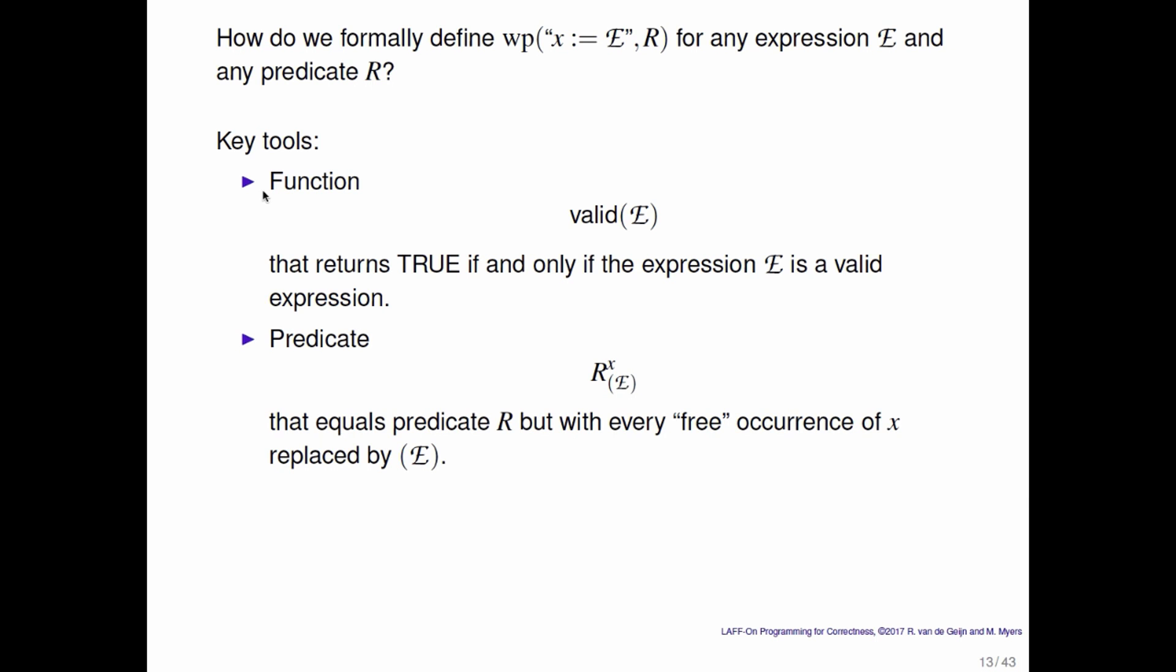Also, we introduce a predicate r super x sub e with parentheses around it. What does that denote? Well, it's the predicate r, the postcondition, but every free occurrence of x is replaced by the expression. What free occurrence means we will illustrate a little bit later on. The definition then of the weakest precondition of the expression e being assigned to x, leaving you in a state where r is true, is defined as the expression must be valid, valid of e, and the predicate r with every free occurrence of x replaced by the expression e.